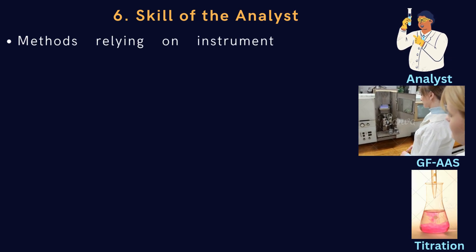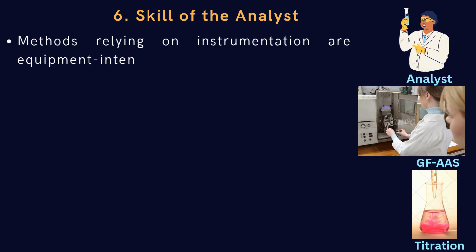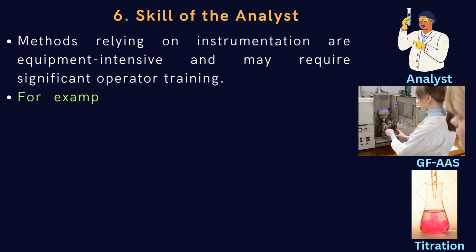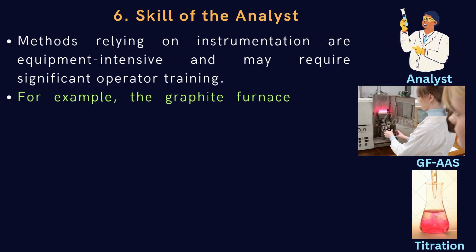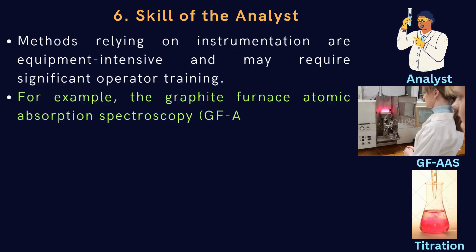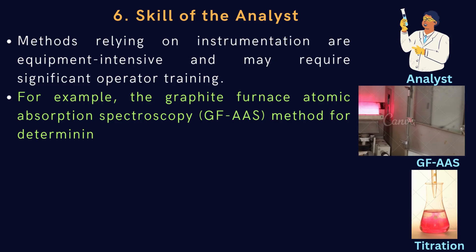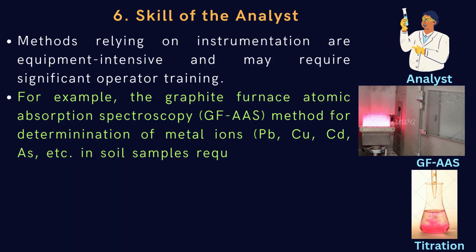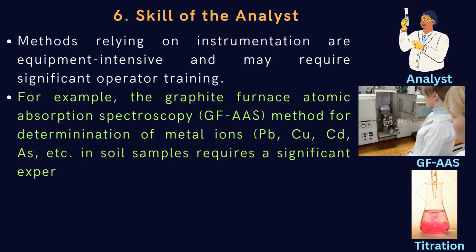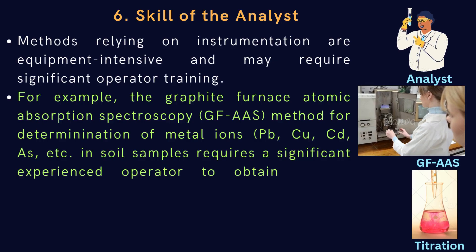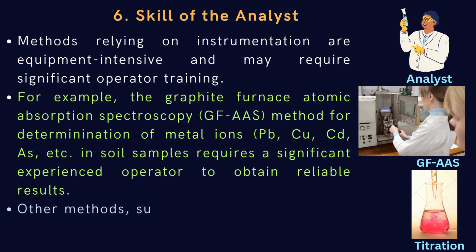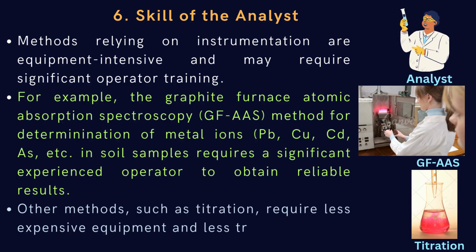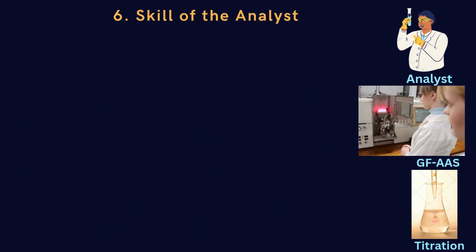Finally, we will see the skill of the analyst and its impact on analytical results. Methods relying on instrumentation are equipment-intensive and may require significant operator training. For example, the Graphite Furnace Atomic Absorption Spectroscopy GFAAS method for determination of metal ions such as lead, copper, cadmium, arsenic, etc. in soil samples requires a significantly experienced operator to obtain reliable results. On the contrary, other methods such as titration require less expensive equipment and less training.